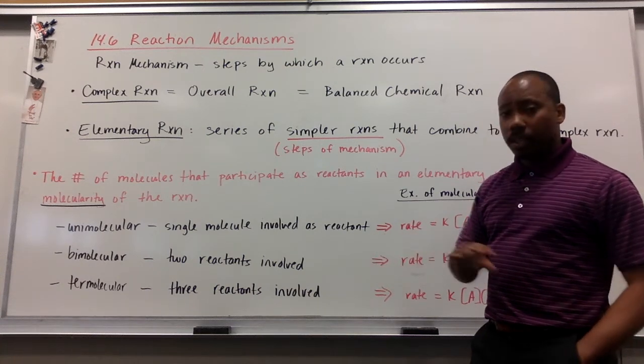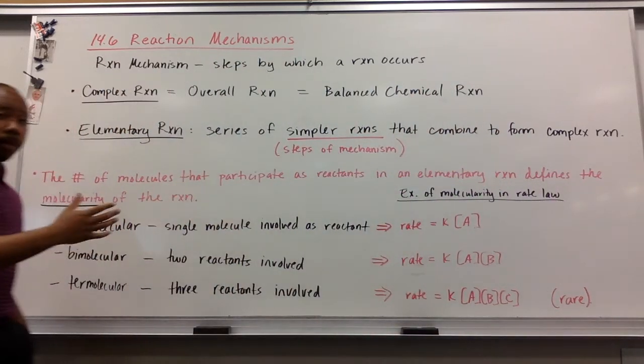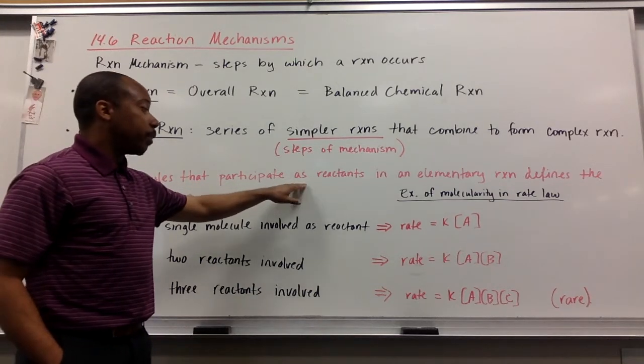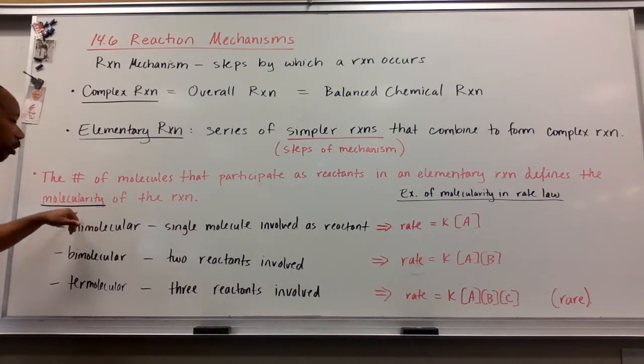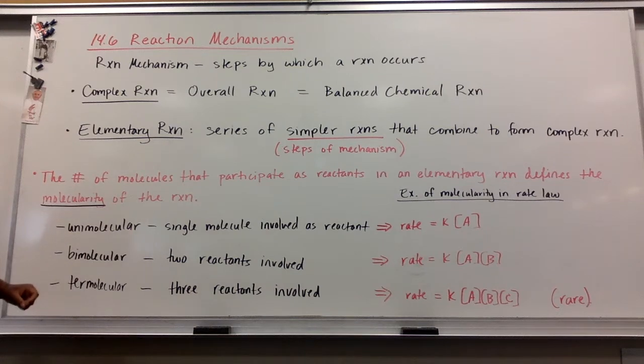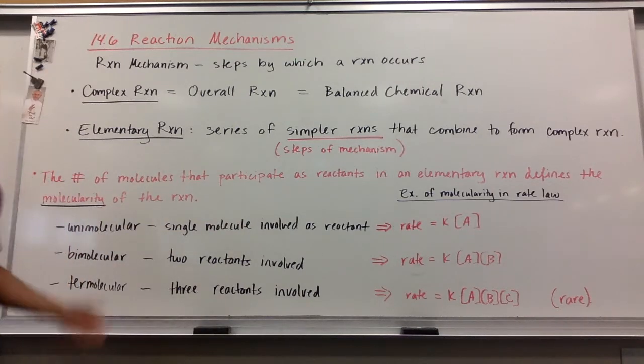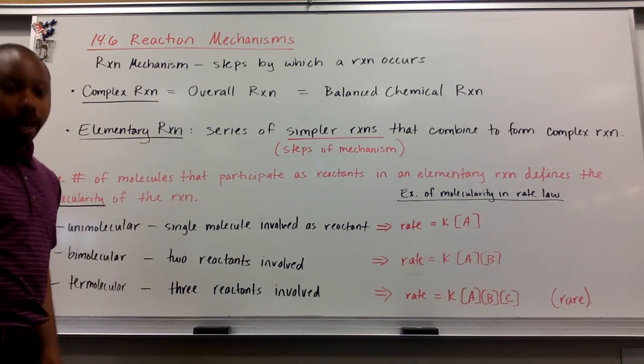Now here in red, something a little detached, but we'll see how this relates in our next board and beyond. The number of molecules that participates as reactants in an elementary reaction defines something called the molecularity of the reaction. Now molecularity can be in three different categories. We can have something that's unimolecular. That means that that reaction has a single reactant. If it's bimolecular, that reaction has two reactants. If it's termolecular, then that reaction has three reactants involved.